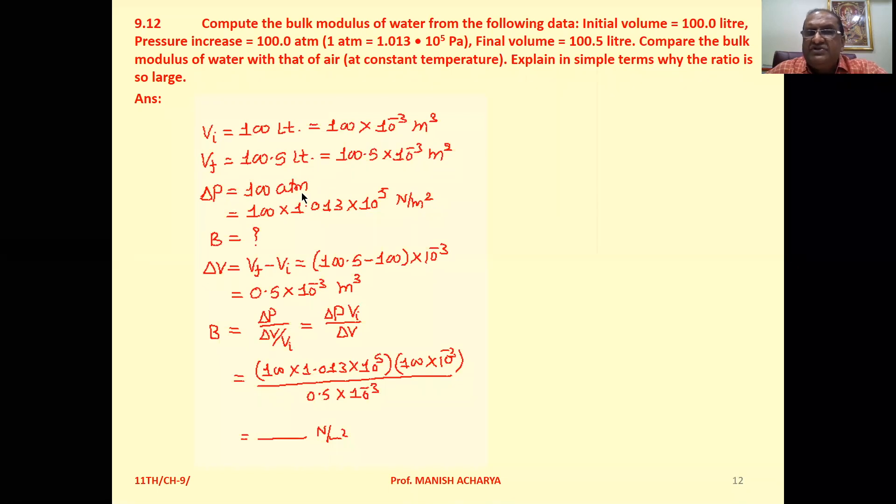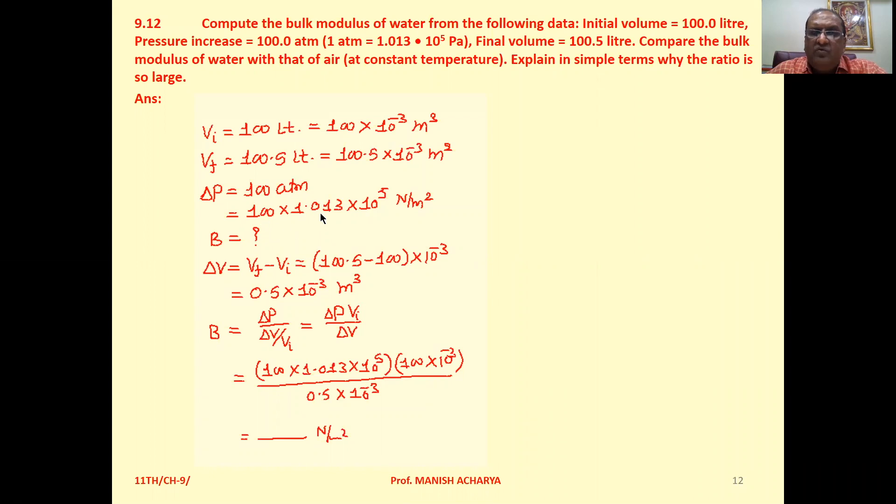Change in pressure is 100 atmosphere, so 100 times 1.013 times 10 raised to 5 Newton per meter square. Now B is what we want to calculate.